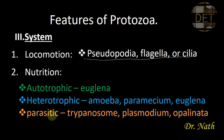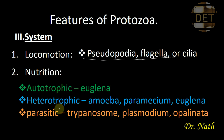Some are parasitic, meaning they feed at the detriment of a higher living organism. Examples of parasitic Protozoa are Trypanosome, Plasmodium, and Opalinata. It is very important to know the different examples that correspond to these different modes of nutrition.